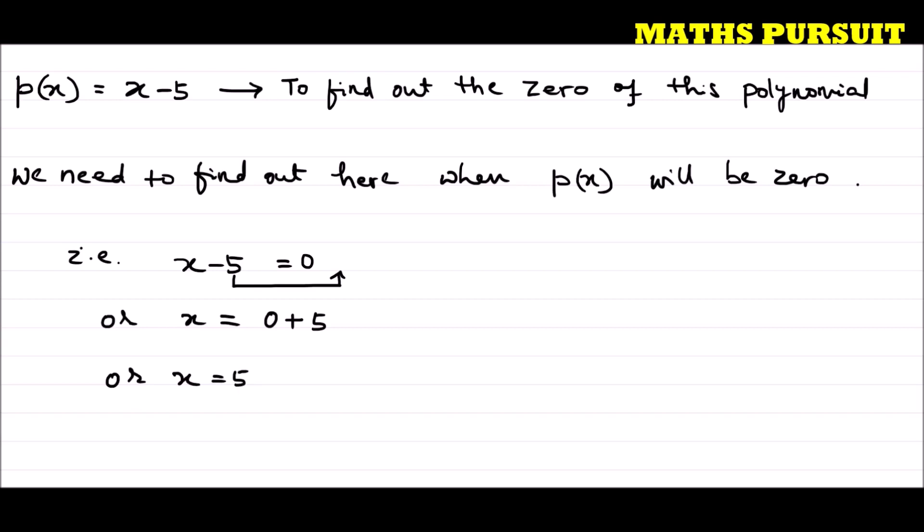Hope you understood this. This is our answer, x = 5. Now let us write our concluding answer. So our answer is x = 5.